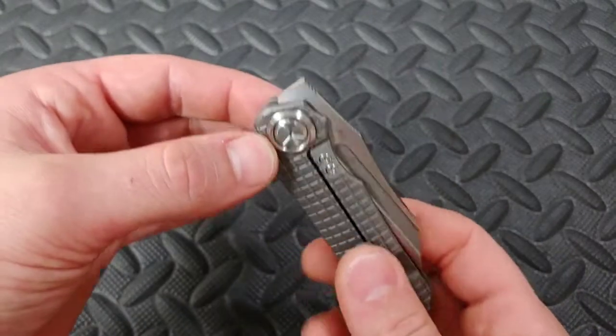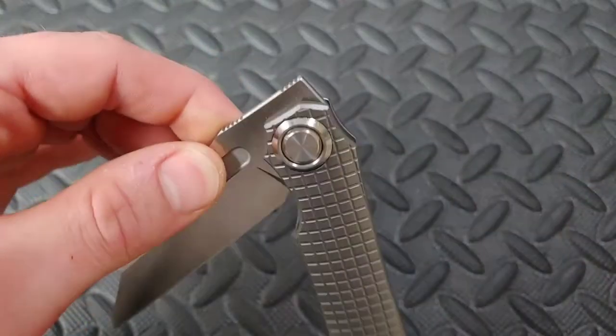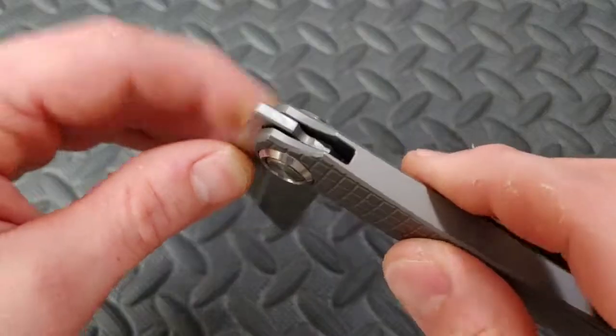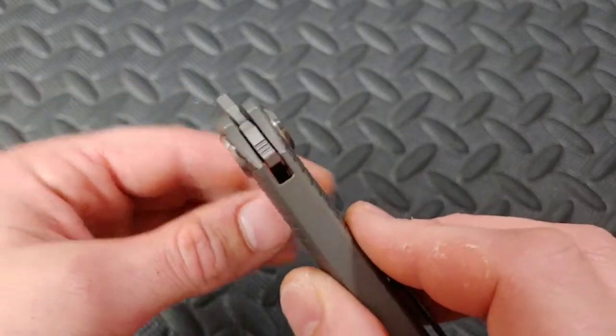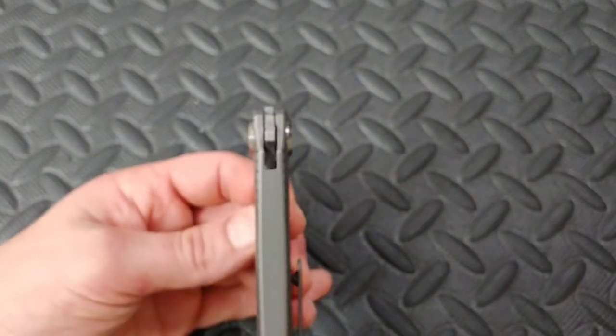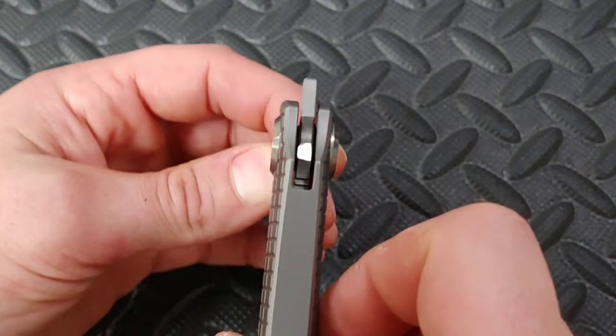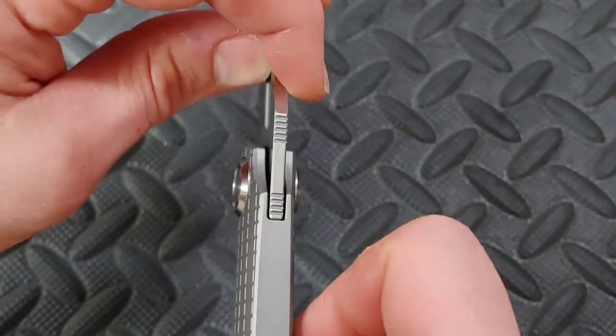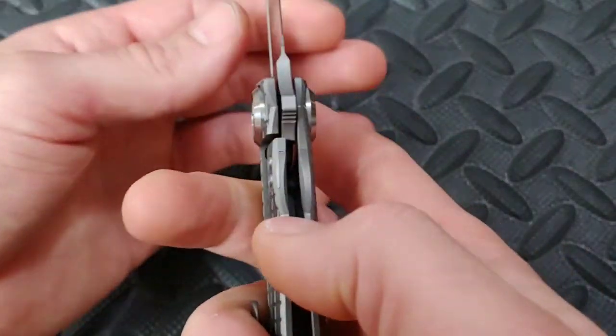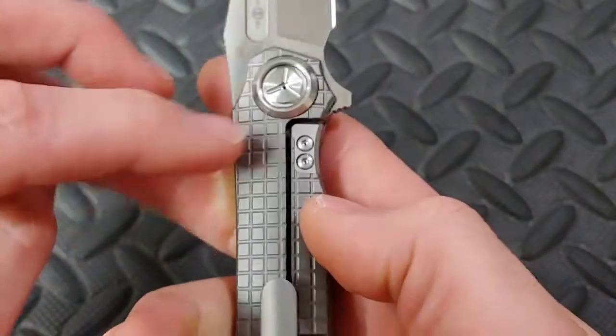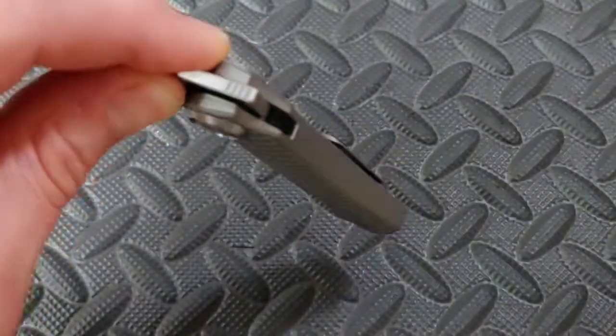I'm absolutely loving it. I like how big this pivot collar is. What type of stop pin is it? I'm kind of confused right now. Okay, so it is an internal stop pin. Oh, this is the stop pin, I see. So it's got the steel lock bar insert but it actually locks up on...